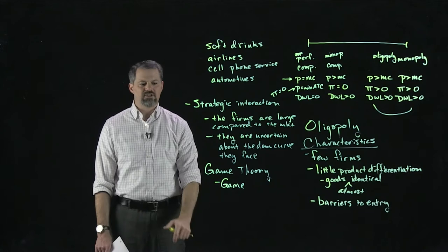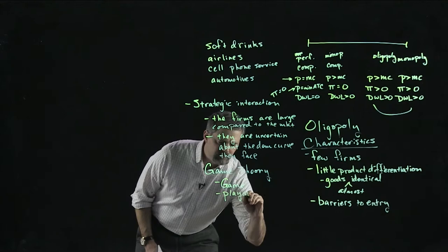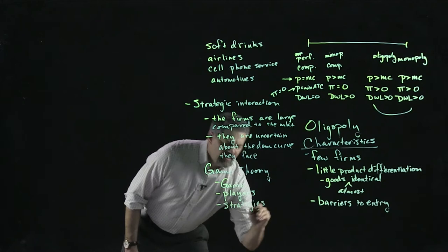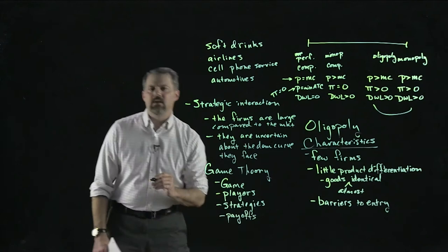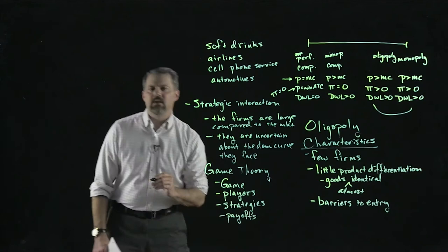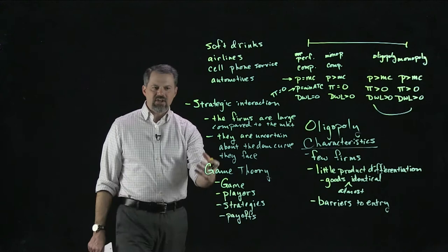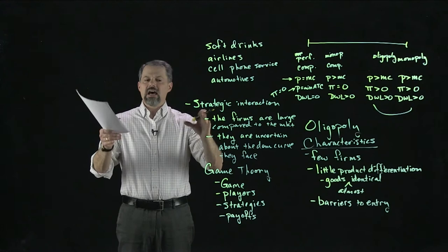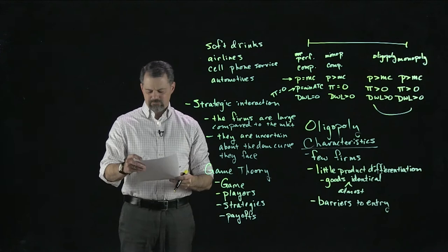The people involved in the game we call the players. The options the players have we call the strategies. And there's going to be some outcome of the strategy — we call those the payoffs. The payoff could be a good thing or a bad thing. Each player chooses their strategy, and then we observe the outcome, and each player gets whatever payoff corresponds to that outcome.